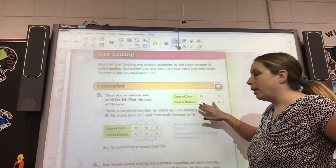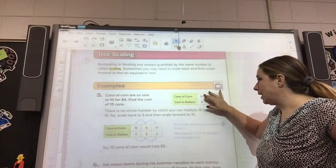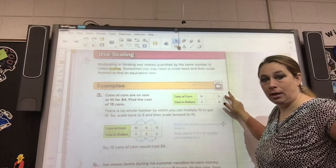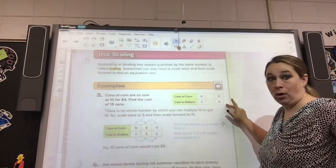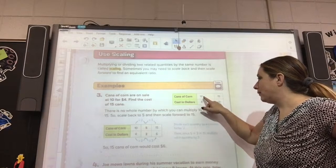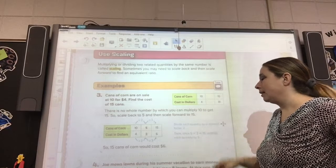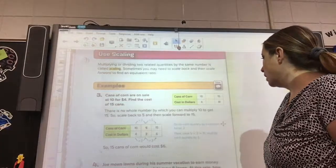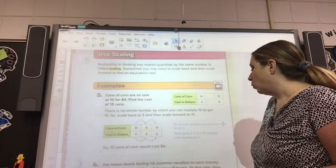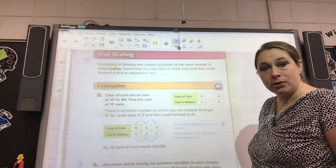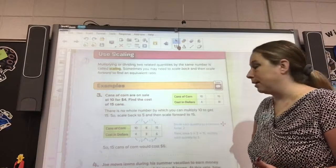So what they did was they put the ratio, the beginning ratio of 10 cans for $4 here and what they wanted the end to be right here. So 15 over, we don't know. So that's why that is left blank. So we have to figure out how we're going to get from 10 to 15. Now, you can't do minus and add. We have to do multiply or divide.